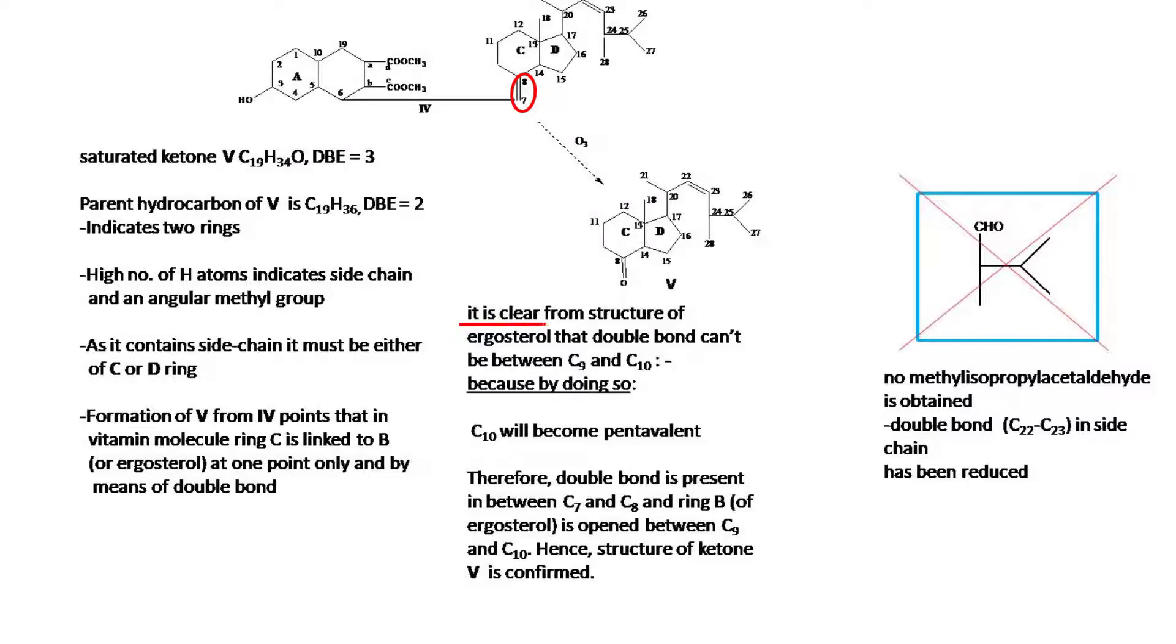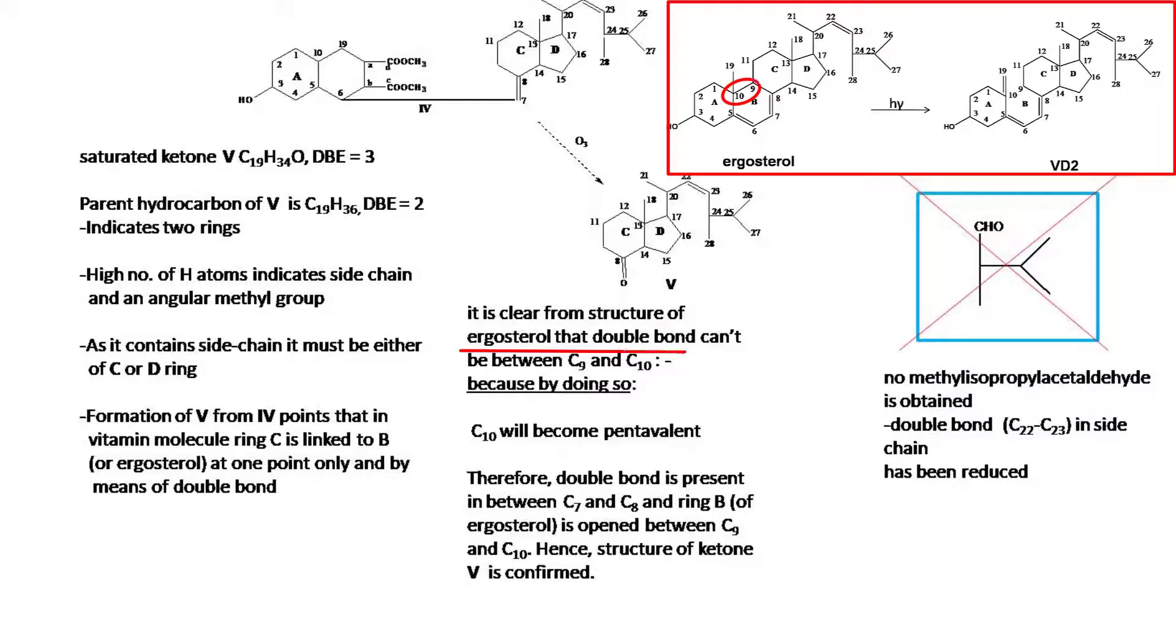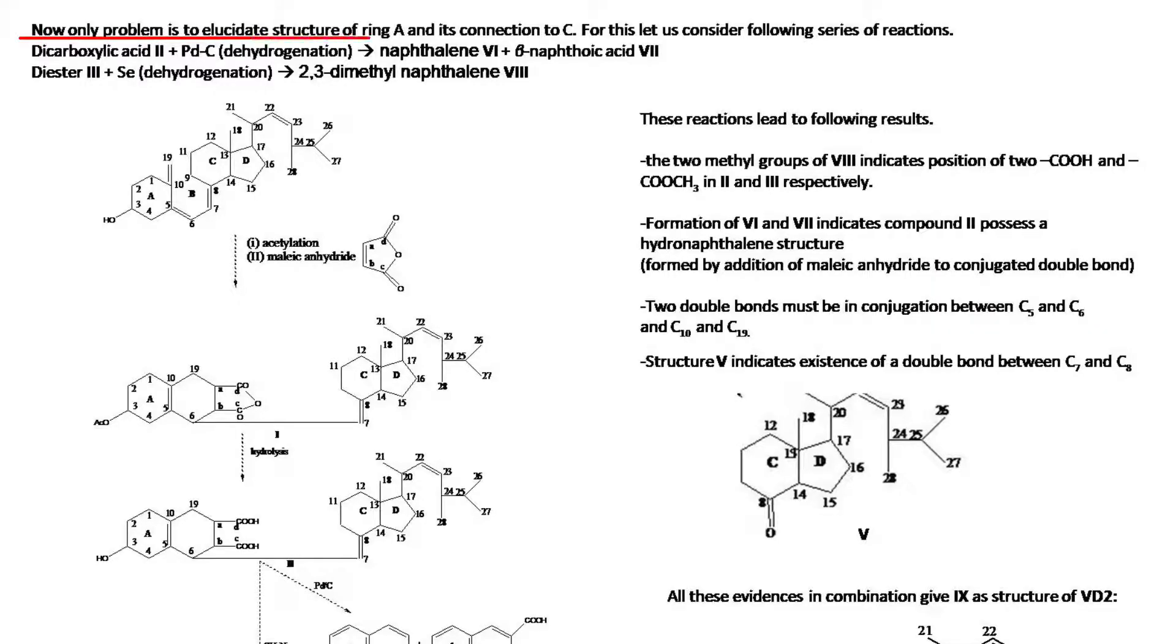It is clear from the structure of ergosterol that the double bond cannot be between C9 and C10, because this would make C10 pentavalent. Therefore, the double bond is present between C7 and C8, and ring B of ergosterol is opened between C9 and C10. Hence, the structure of ketone fifth is confirmed.